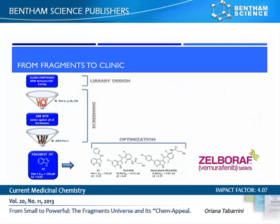In conclusion, it is worth mentioning the drug discovery case of Vemurafenib, a B-Raf inhibitor approved for the treatment of melanoma. It represents the first case in which a fragment is evolved into a marketed drug. The drug discovery project started with a high-concentration screening, in which 20,000 compounds were tested against a panel of B-Raf-related kinases.